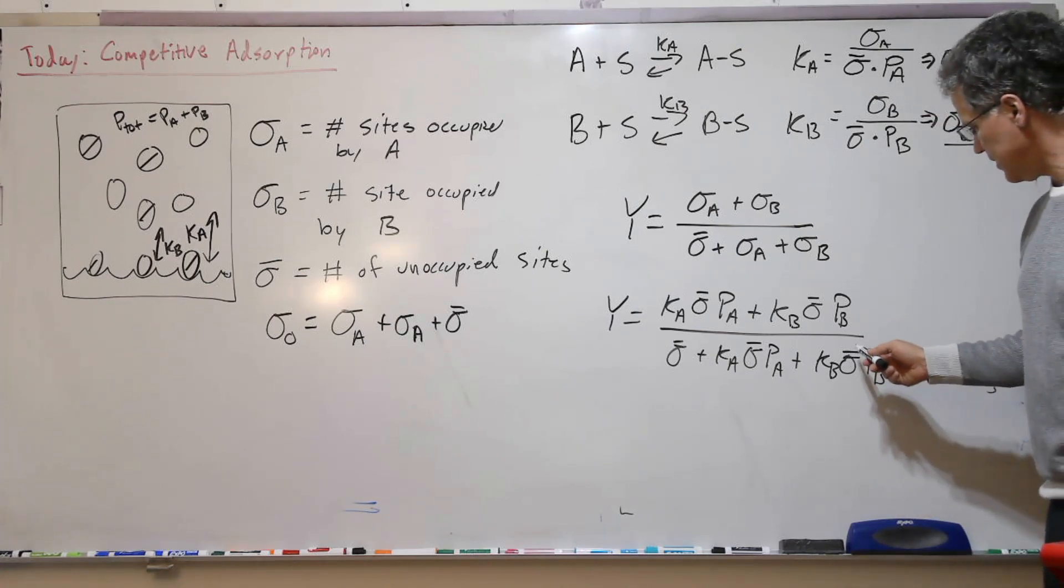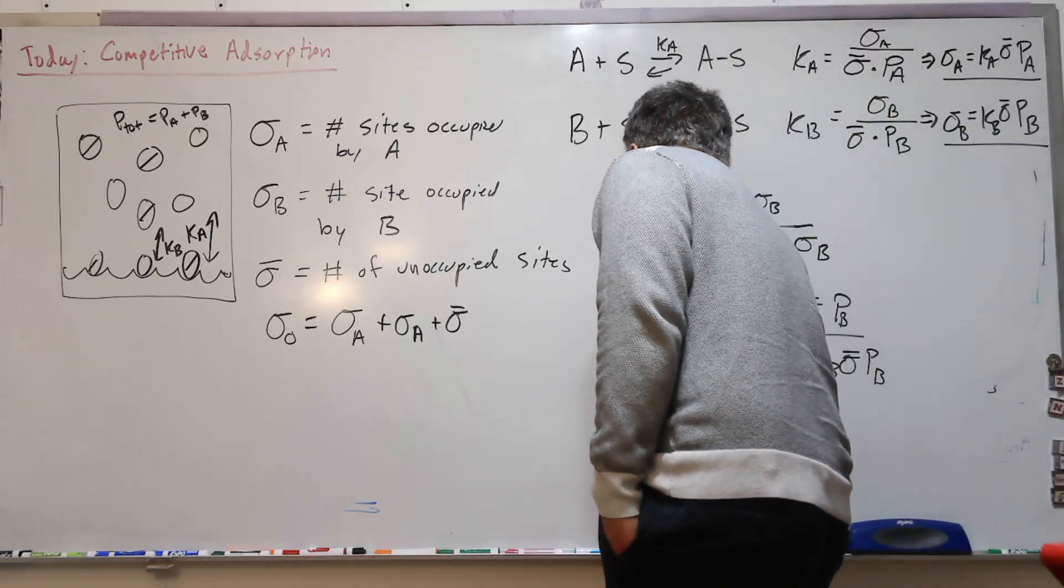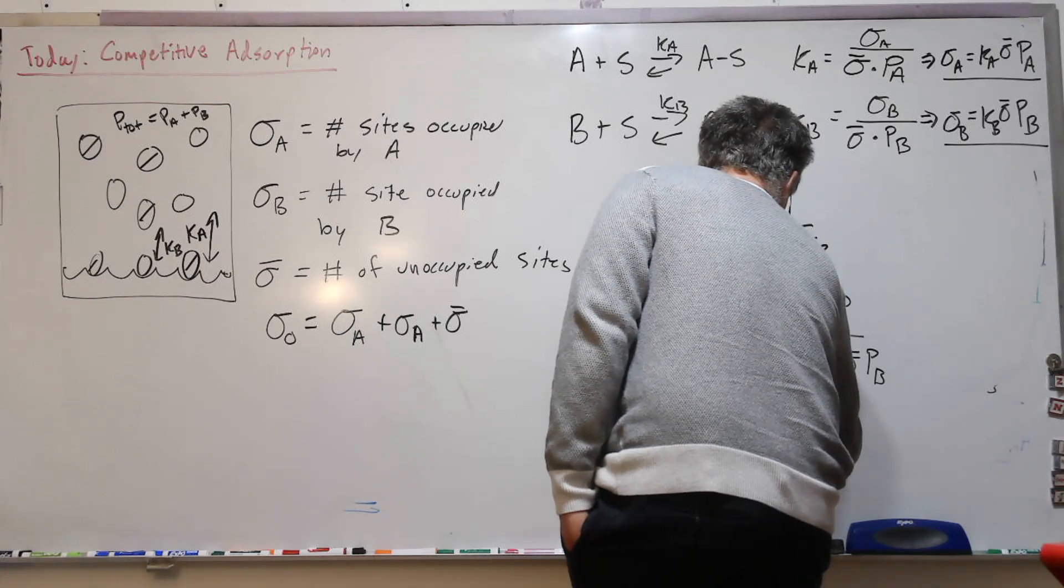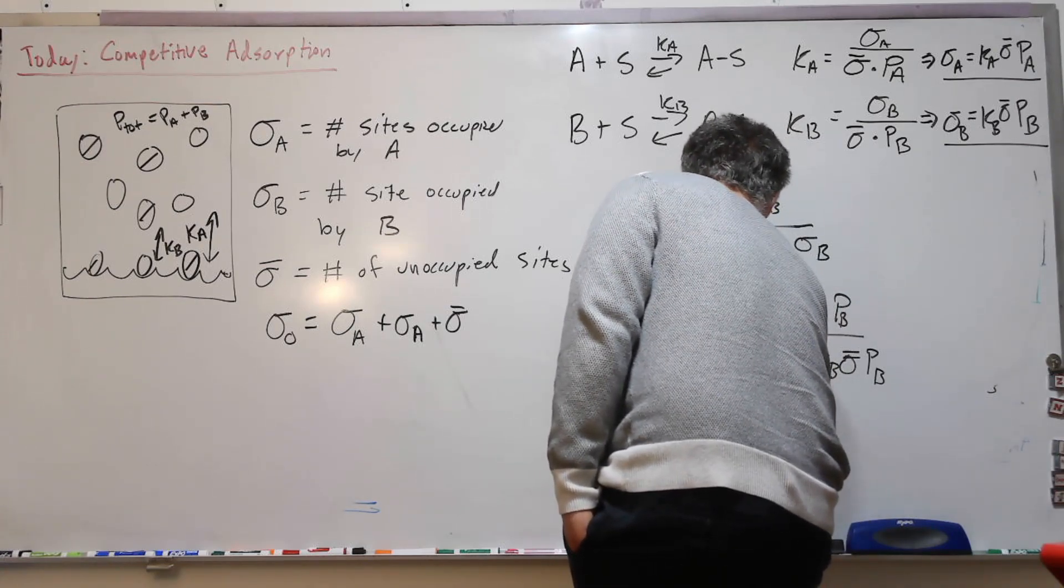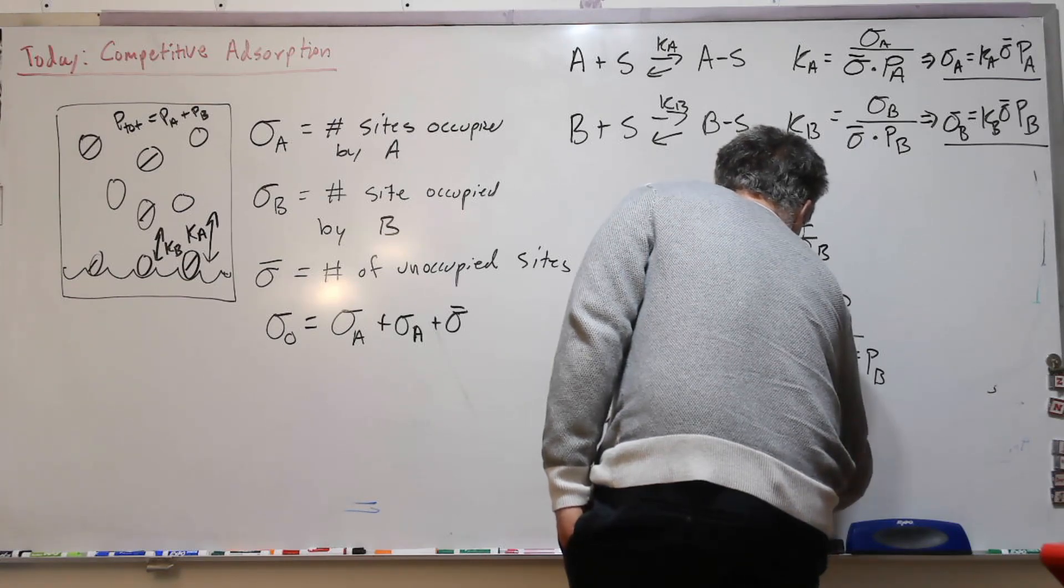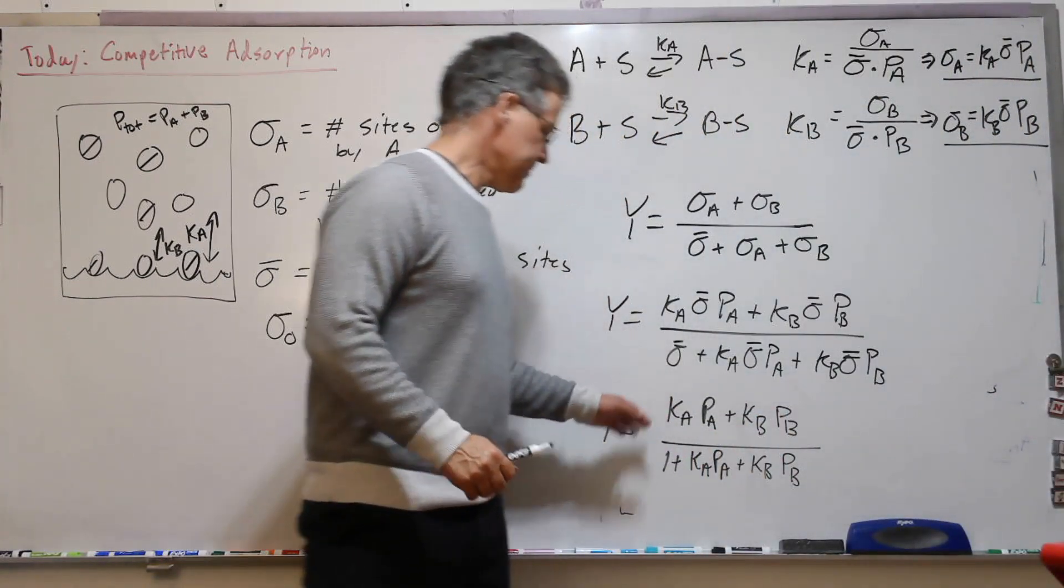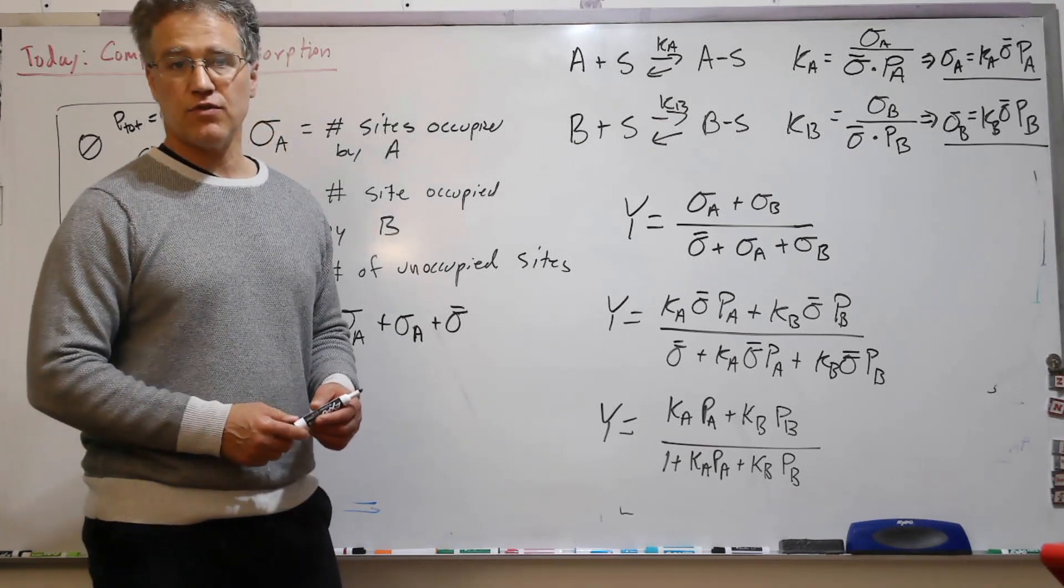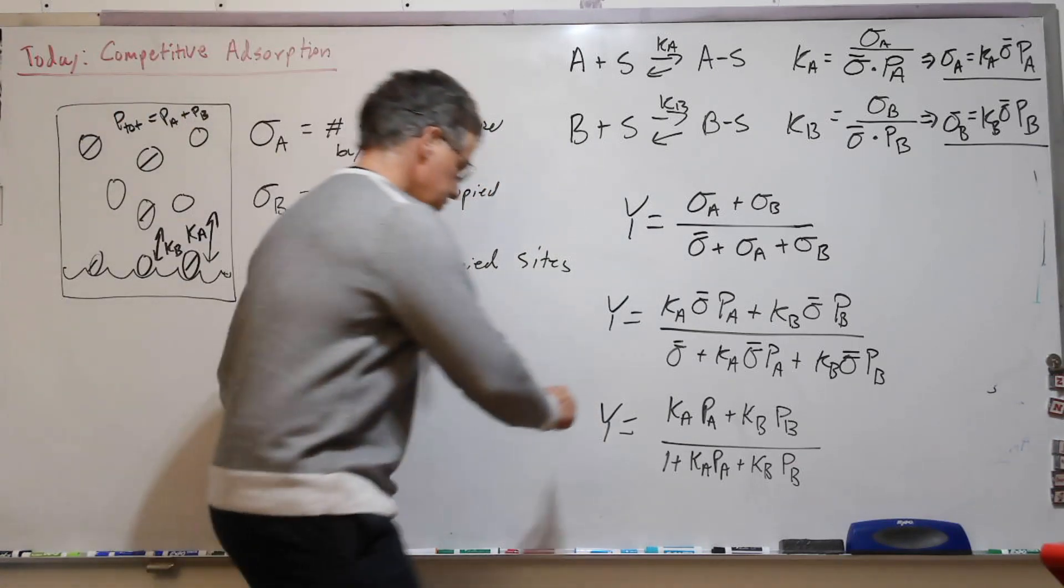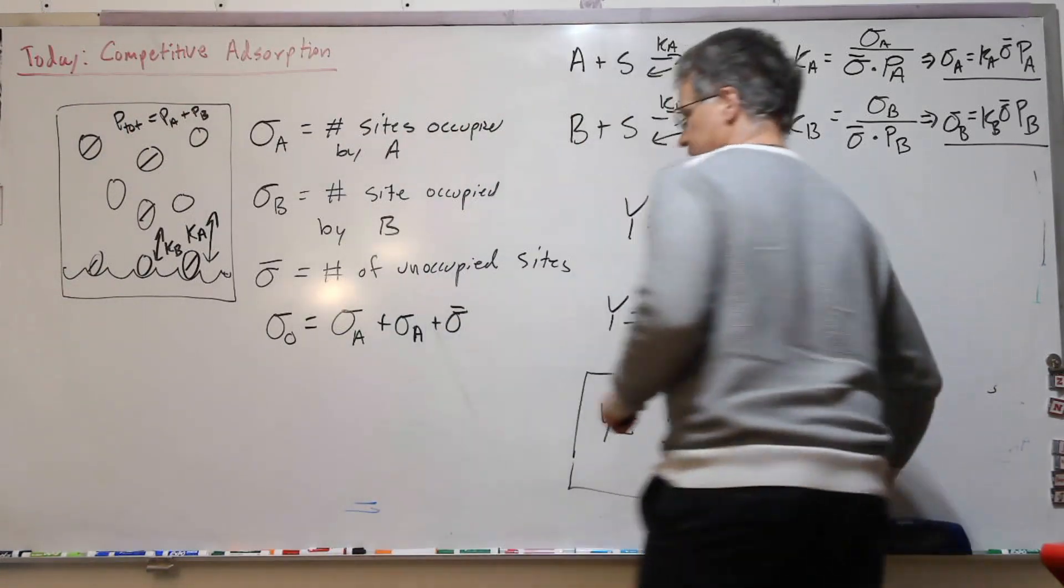And we see a common sigma bar, and we're left then with just partial pressures and equilibrium constants, which is what we often want. And just looking at this structure, you can kind of see that it looks like we might expect, based on what we've accomplished for our Langmuir isotherm previously. So here's our expression for competitive adsorption between species A and species B.